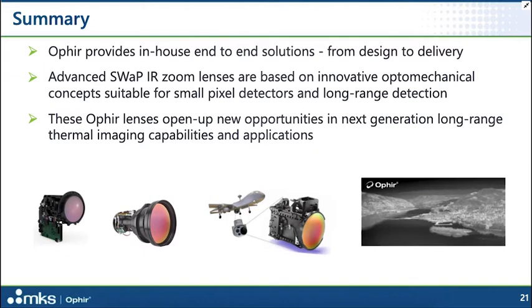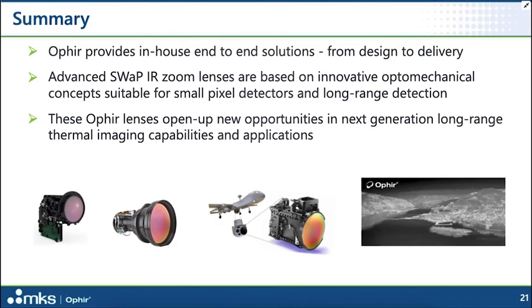In summary, Ophir provides in-house end-to-end solutions for customers from design to delivery. We offer advanced low-SWAP zoom lenses based on innovative optomechanical concepts, suitable for very small pixel next-generation detectors and long-range detection. These Ophir lenses open up new opportunities in next-generation long-range thermal imaging capabilities and applications. Thank you for your time.